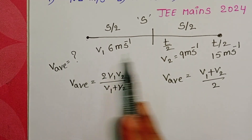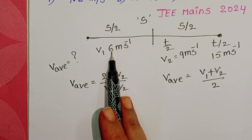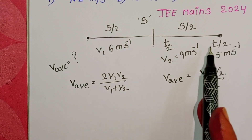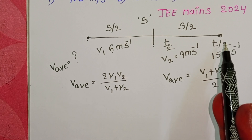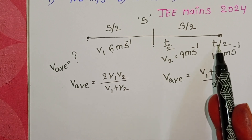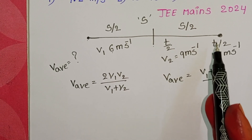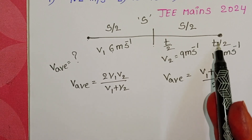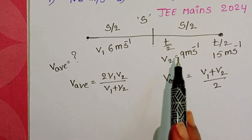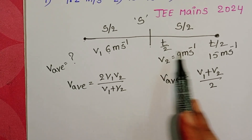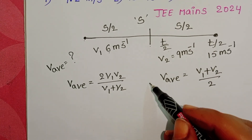The total distance is divided into two equal parts. We know the first part speed, but we don't know the second part speed. The second part is travelled in two equal time intervals, so first find the average speed for the second part, then find the average speed for the total journey. Since time is divided into equal parts, use the formula V_avg = (V1 + V2) / 2.